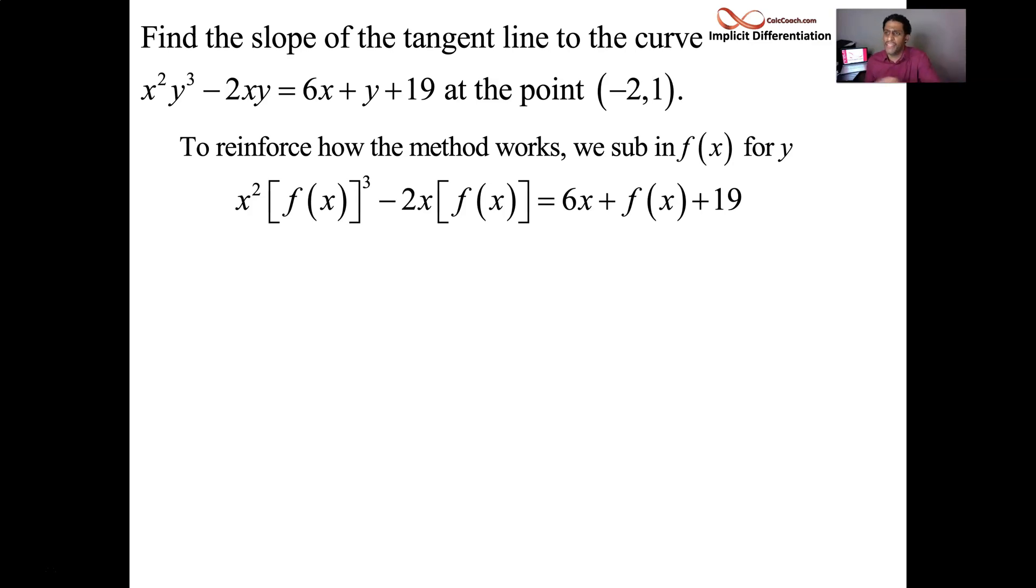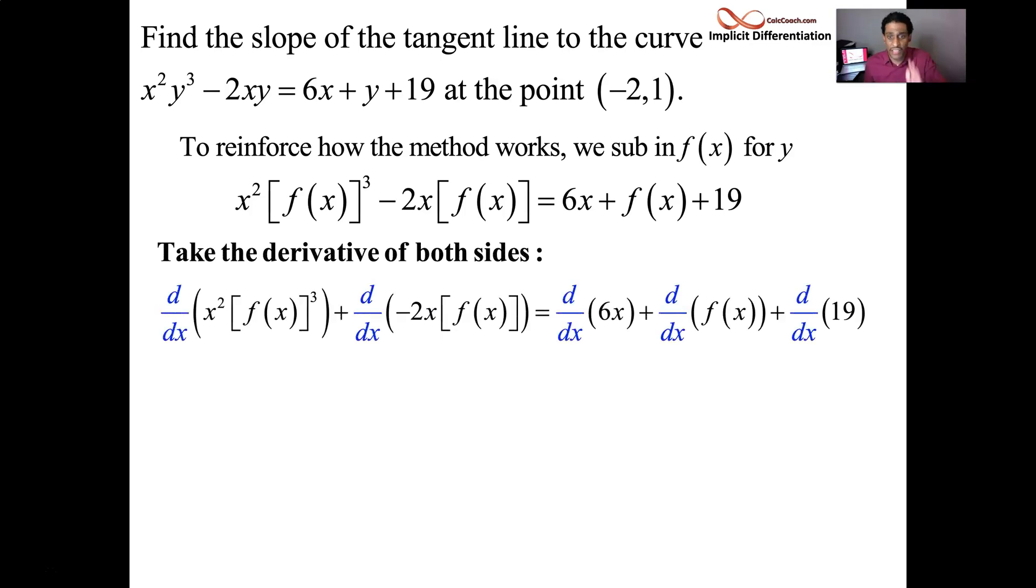So our job is going to be to take the derivative of the equation. If the left-hand side is equal to the right-hand side, then the derivative of the left-hand side should be equal to the derivative of the right-hand side. So what I'm going to do is take each individual term and put the symbol d/dx in front of it, taking the derivative of the entire equation. These two terms on the left-hand side have both x and f of x in them. Each of these guys will have to be done as a product rule. We'll treat the x squared as the first function, the f of x quantity cubed as the second function. The derivative of the first times the second plus the first times the derivative of the second.